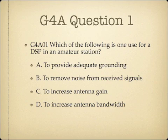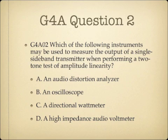Question 1: Which of the following is one use for a DSP in an amateur station? A, to provide adequate grounding; B, to remove noise from received signals; C, to increase antenna gain; or D, to increase antenna bandwidth. Question 2: Which of the following instruments may be used to measure the output of a single sideband transmitter when performing a two-tone test of amplitude linearity? A, an audio distortion analyzer; B, an oscilloscope; C, a directional wattmeter; or D, a high impedance audio voltmeter.